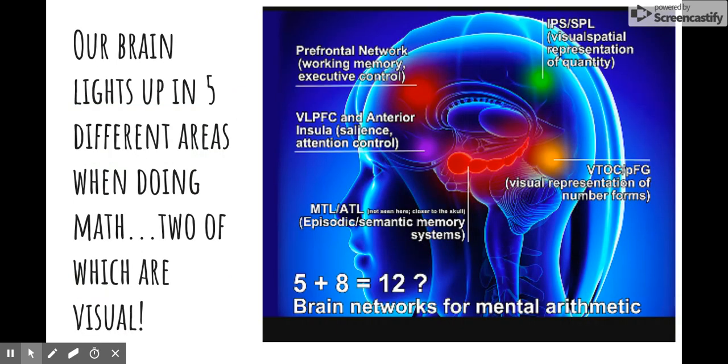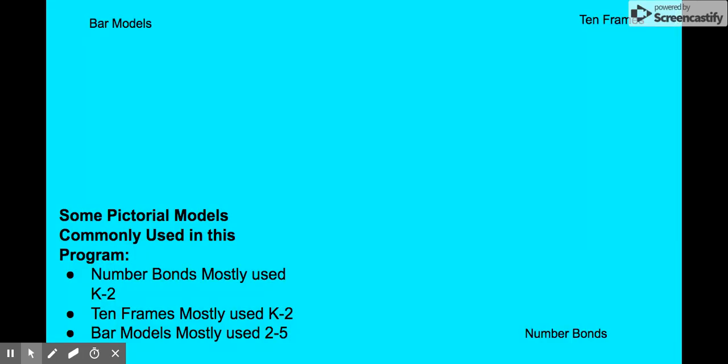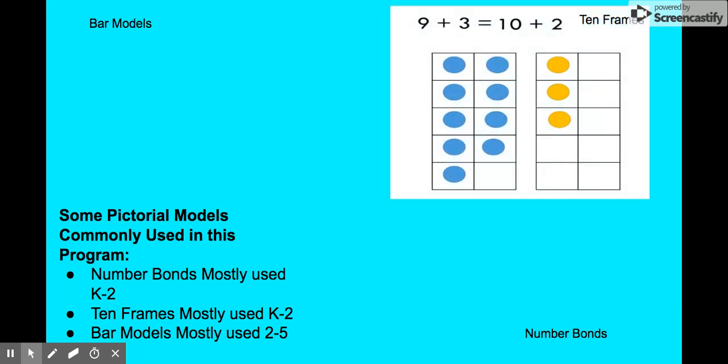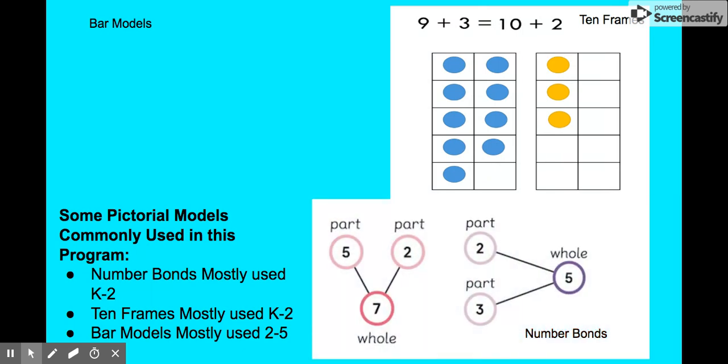Our brain lights up in five different areas while we're doing math. Two of these are visual. Because of this, we have some very useful pictorial models that we consistently use in our program. 10 frames are introduced in pre-k and kinder, and used up until grade 2. Number bonds help us compose and decompose numbers. We can make these with addition or multiplication.